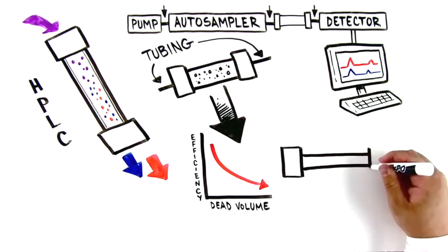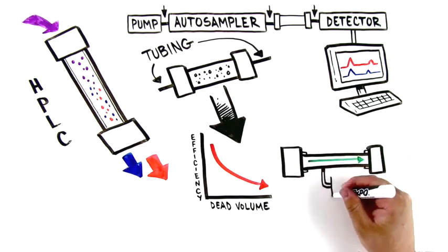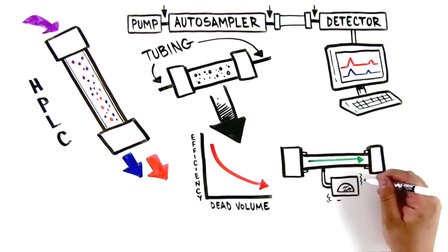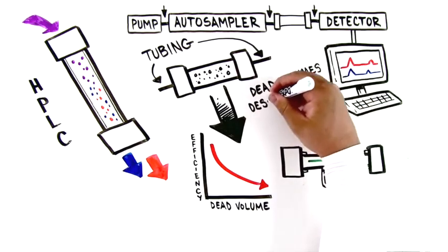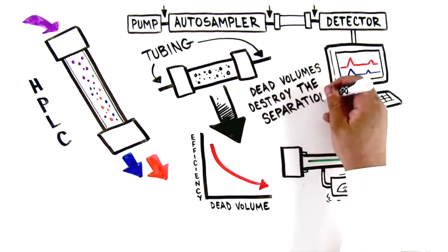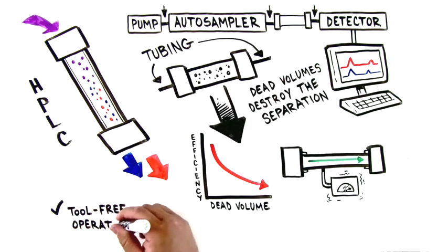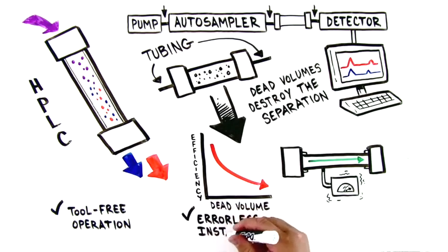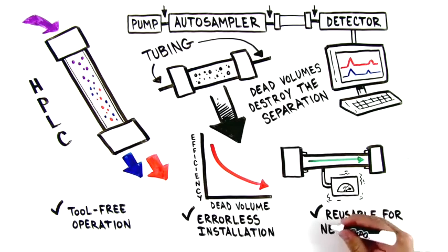Ideally, such tubing should seal a connection between two parts of the fluidic pathway, even at highest pressures, without creating dead volumes which can destroy the separation. It should facilitate a tool-free operation, an easy errorless installation, and it should be reusable when a setup is changed.